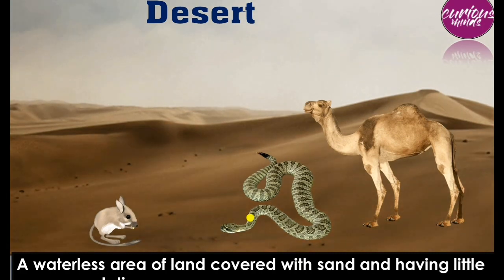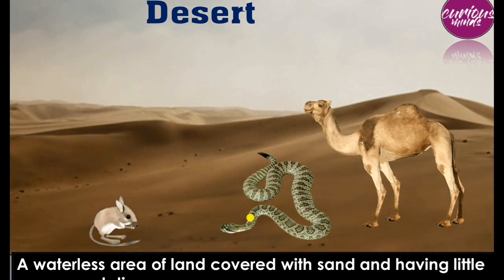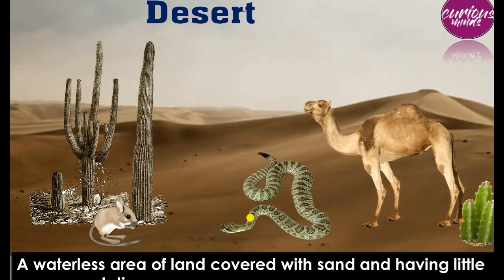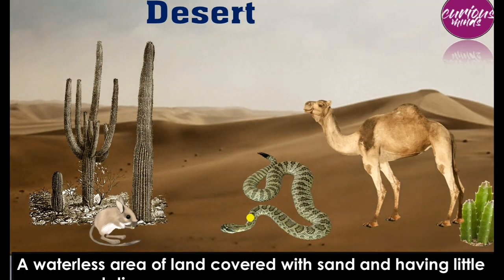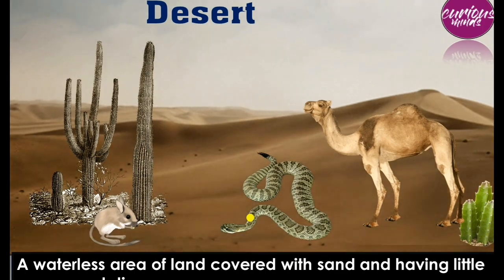Snakes and rats in the desert stay in deep burrows during the day and come out at night to find food. For desert plants like cactus, the leaves are either very small or modified into spines so that water loss is reduced. The stem is thick and has a waxy layer present so that water loss from the stem is also reduced.